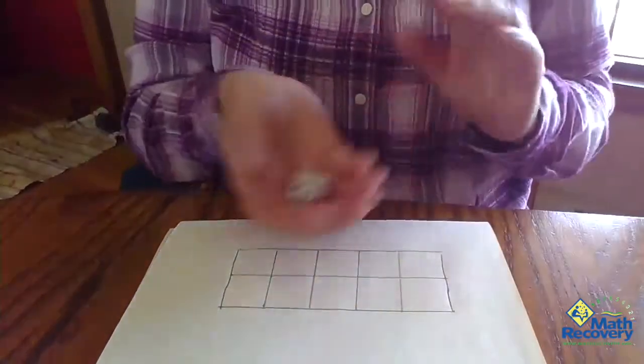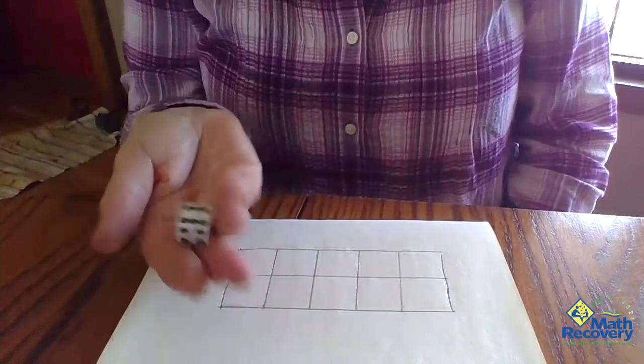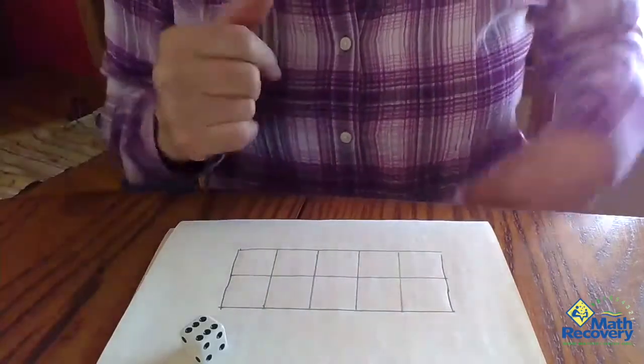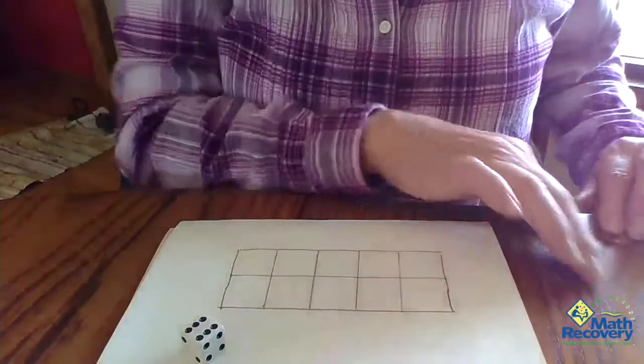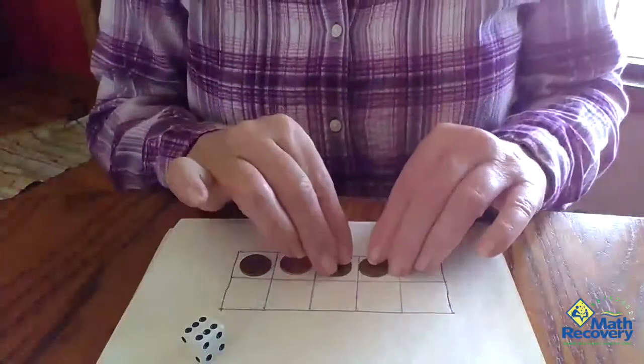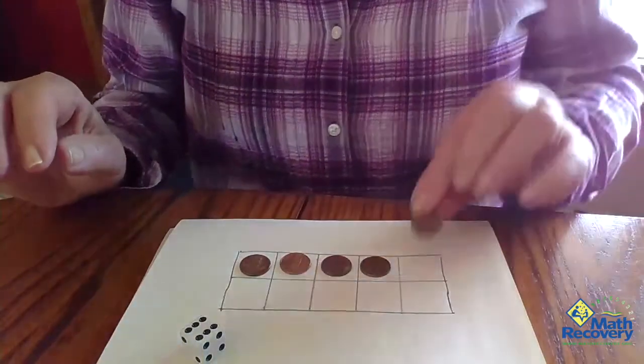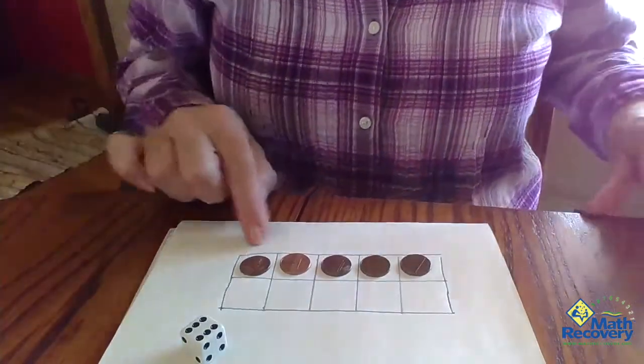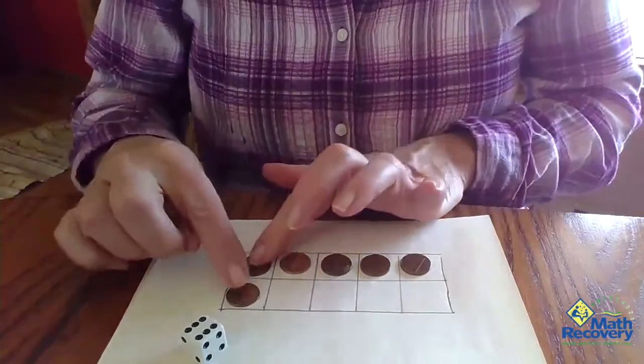Okay, so this game would just involve having one die. You roll it, whatever that number is, have the child put that number into the tens frame and they could put a six into the tens frame like so, filling up the top row first and then coming down here.